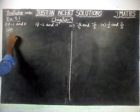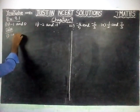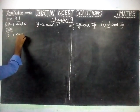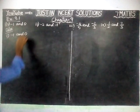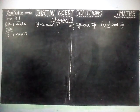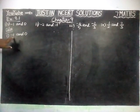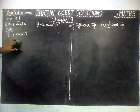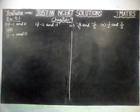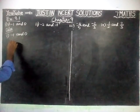The first question is: find 5 rational numbers between minus 1 and 0. To get rational numbers between 2 rational numbers, first we have to find the equivalent rational number.